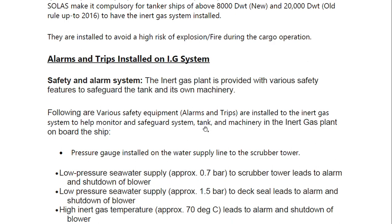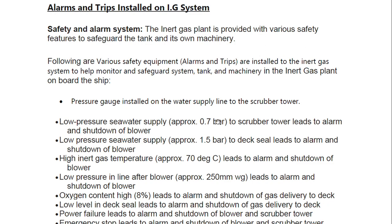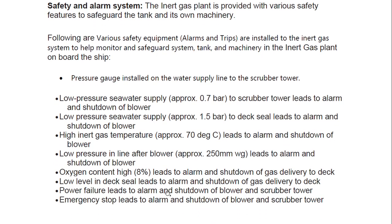There is a pressure gauge installed on the water supply line to the scrubber tower, which operates independently. Low pressure sea water supply at approximately 0.7 bar to the scrubber tower leads to alarm and shutdown of blower. Low pressure sea water supply at approximately 1.5 bar to the deck seal leads to alarm and shutdown of blower. High inert gas temperature at approximately 70°C leads to alarm and shutdown of blower. Low pressure in line after blower at approximately 250 mmWC leads to alarm and shutdown of blower. Oxygen content high at 8% leads to alarm and shutdown of gas delivery to deck.